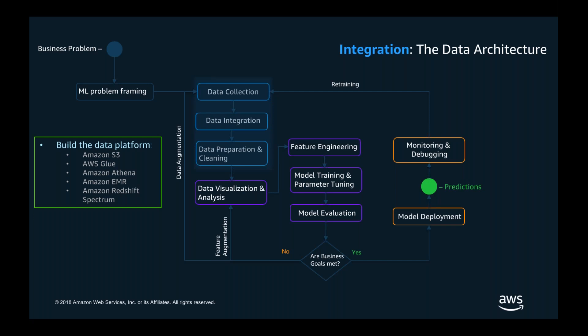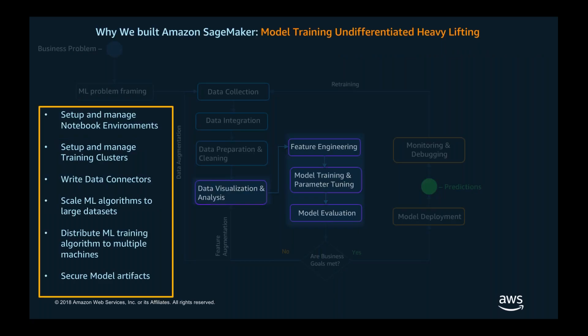After we have data in a prepared format, this is when we can actually start to use SageMaker. SageMaker first starts as a managed notebook environment. For those who haven't used data science tools, there's a tool called Jupyter Notebook — an interactive REPL where you execute commands written in Python or other languages. Data scientists use Jupyter Notebooks to share their data and experiments with each other. It's become a best practice, and notebooks include both documentation and executable code.